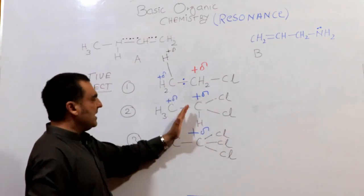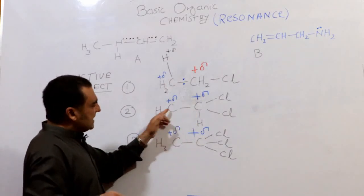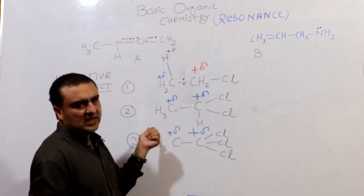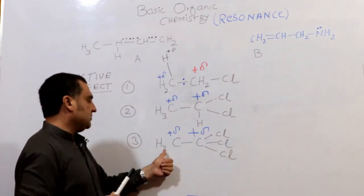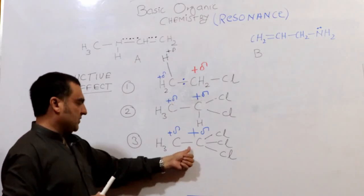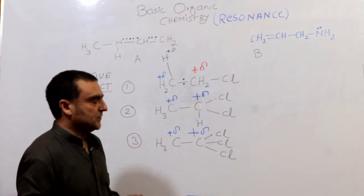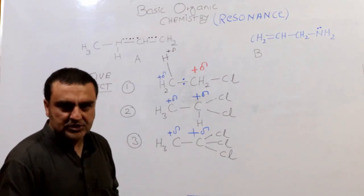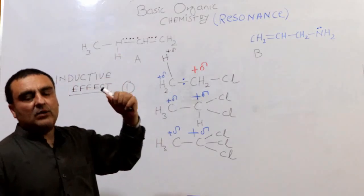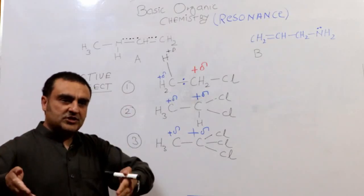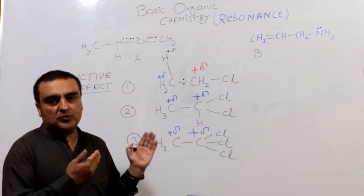In summary: the carbon directly attached to the electronegative group acquires the greatest partial positive charge. The next carbon along the chain acquires a moderate partial positive charge, and hydrogens further along acquire a very small partial positive charge at the third bond. With two or three electronegative groups, these effects are amplified. We will study the usefulness of these concepts in acid-base chemistry, but our current aim is to understand resonance — what it means and how it explains molecular reactivity.